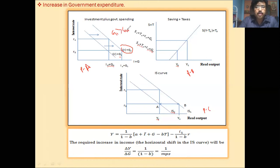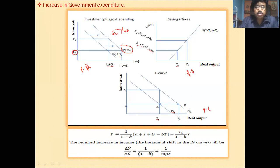Now, the interest rate is R0. And if government expenditure is increased, then I0+G0 will become I0+G1. The interest rate remains the same because the government spending has increased.